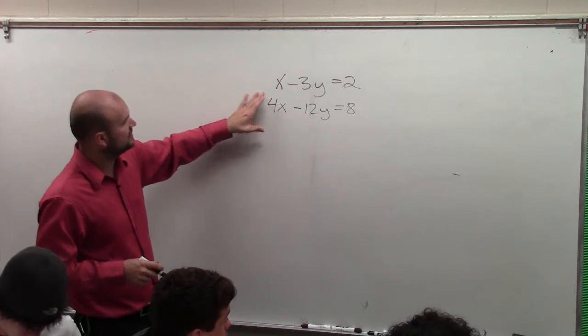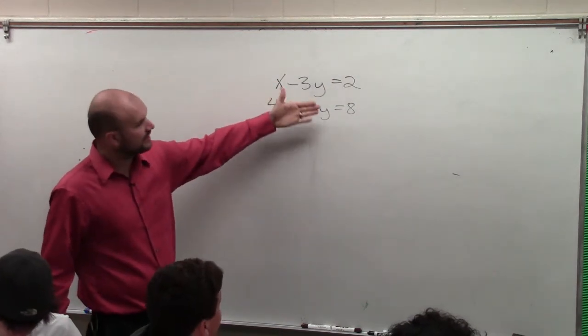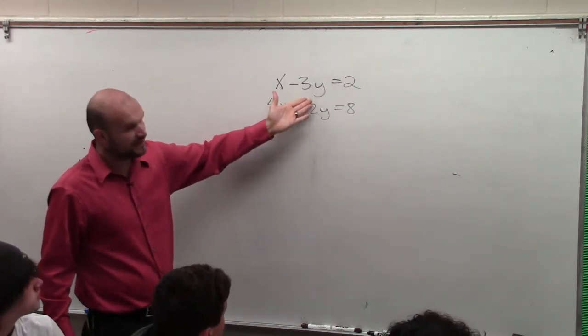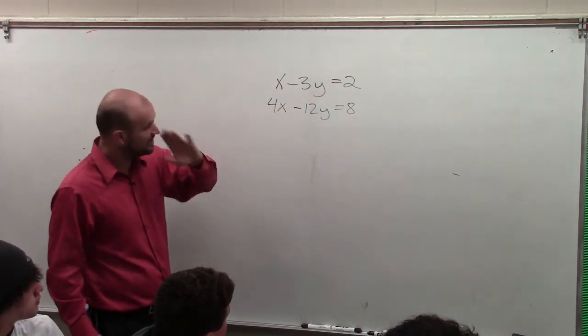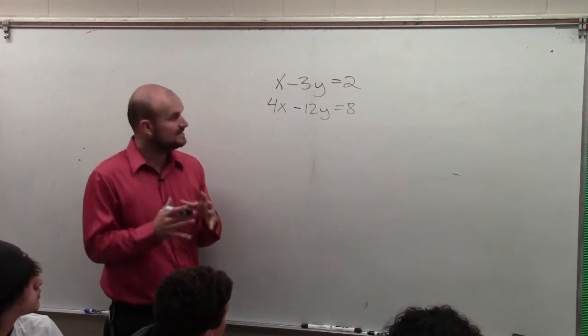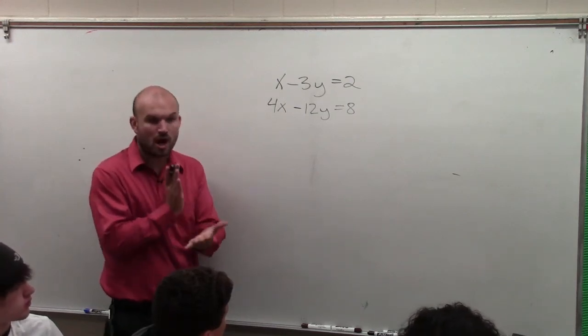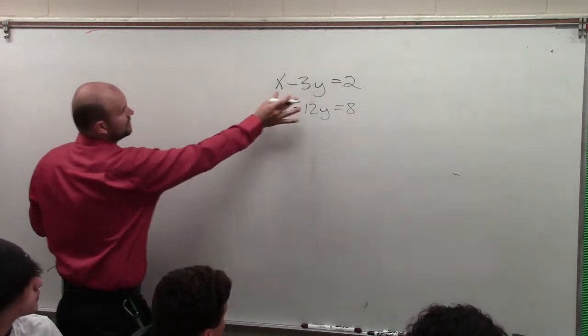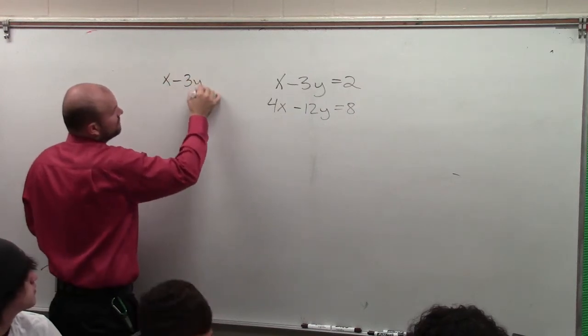And basically what I'm going to do is you could either use intercept method, where you try to find the x and y-intercepts, or you can use slope-intercept form. Particularly when graphing a system, I think slope-intercept form is the easiest because what we're going to be doing is looking for our intercept point. So what I'm going to do is I'm going to rewrite each of these in slope-intercept form.